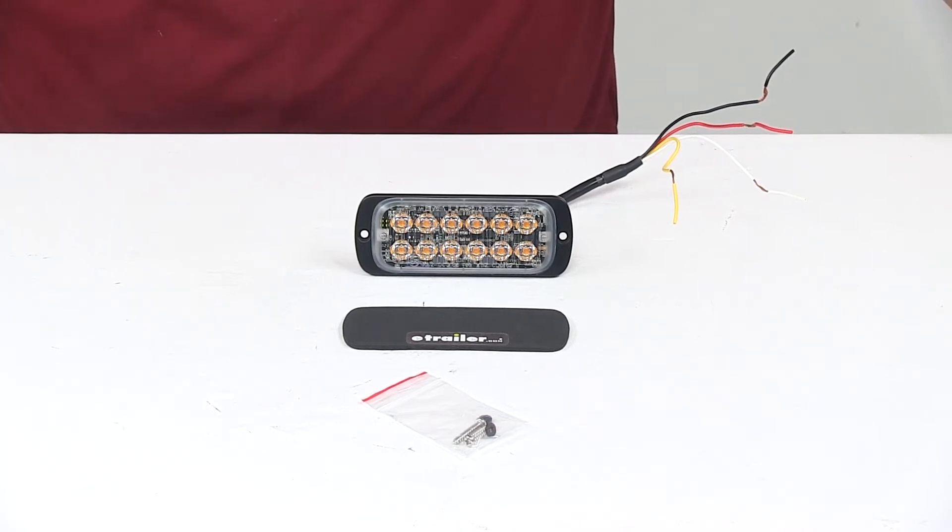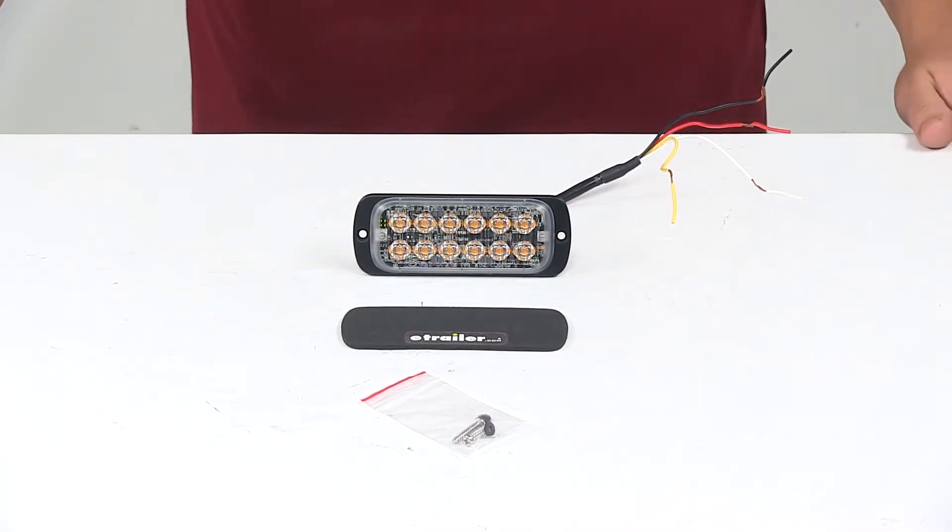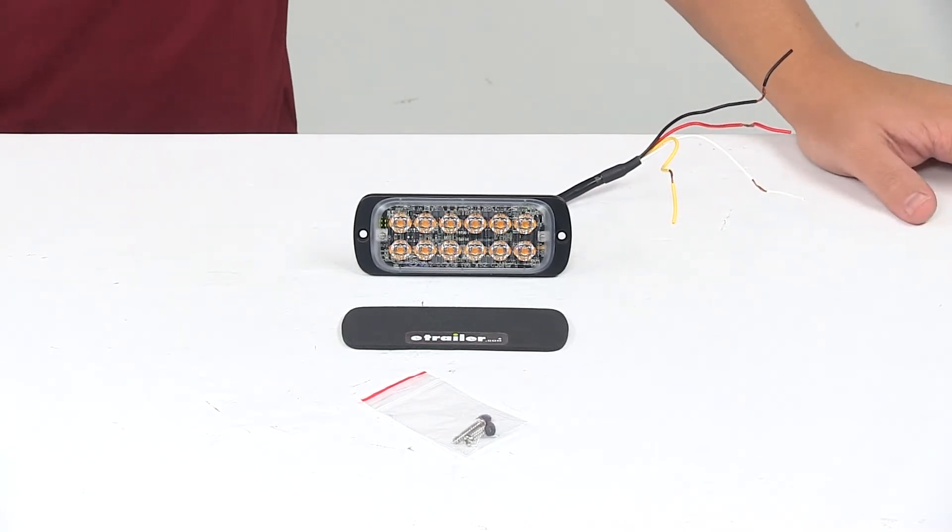Today we're taking a look at the Byers Products 12 LED Thin Mount Strobe Light. The Amber Thin Mount Light is a rectangular strobe light that's designed with an ultra slim 3 1⁄8 inch profile, so it's great for fitting into tighter areas.